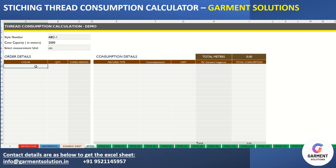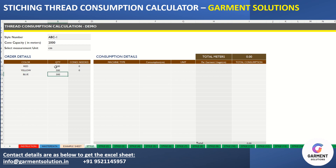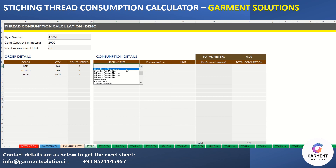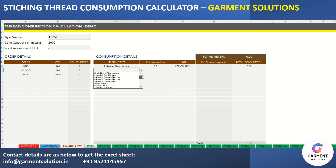Enter the order details color-wise — for red, yellow, and blue, the number of pieces might be 100, 500, and 3000. For this shell, just enter the machines which will be used, for example the plane machine or flat lock.